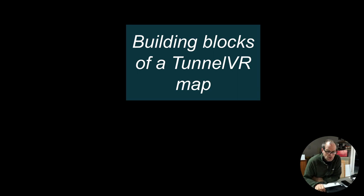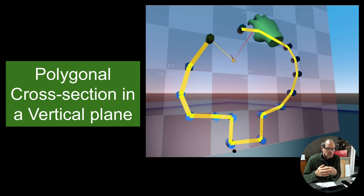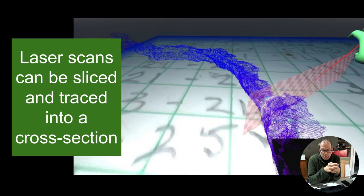Everything's based on cross sections: a polygonal cross section on a vertical plane. These polygonal things can actually be cut through laser scans, which are very prevalent now—more than you think. This one is a scan from an iPhone 12 Pro, so a lot of people have the equipment to scan hundreds of meters of cave without any hassle. What you do is you put a cross section in it and then we can trace it up.